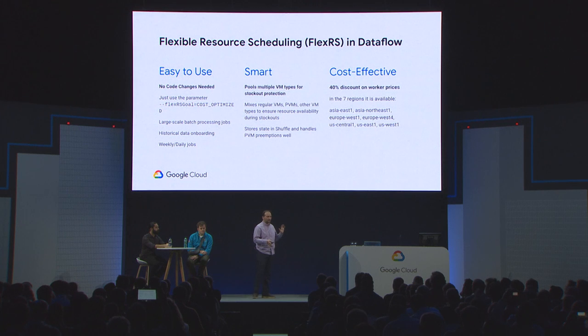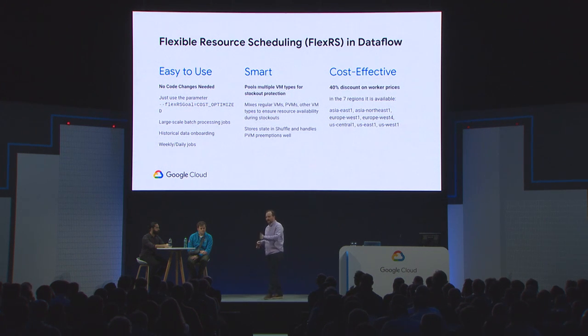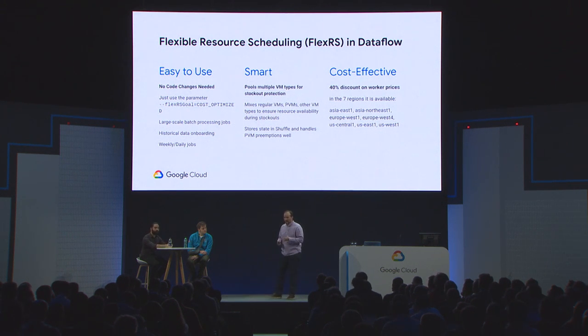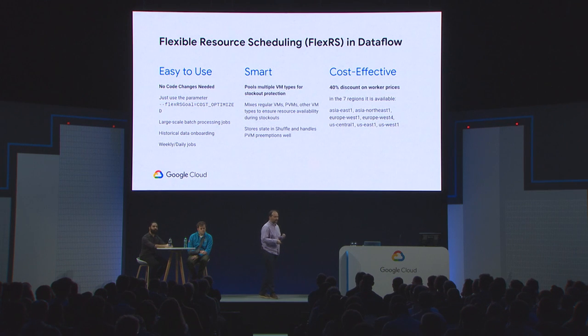What is FlexRS? FlexRS is a much cheaper way to do batch processing with Dataflow. You can run the batch pipelines you have today without code changes in FlexRS mode and get immediate cost savings. You launch it with a new parameter: --flexrs_goal=COST_OPTIMIZED. This is all that's required to start generating 40% savings on your worker costs. The catch: FlexRS submits jobs into a processing queue, so there will be a delay between when we accept the job and when we actually run it. If you have daily or weekly jobs where you can accept up to a six-hour delay, that's a workload you can move to FlexRS.